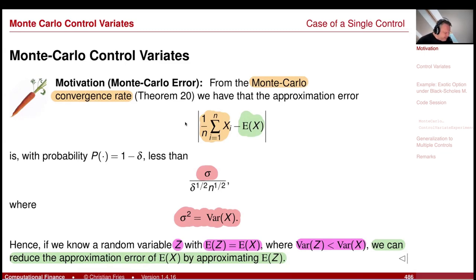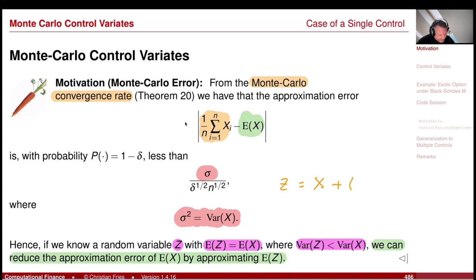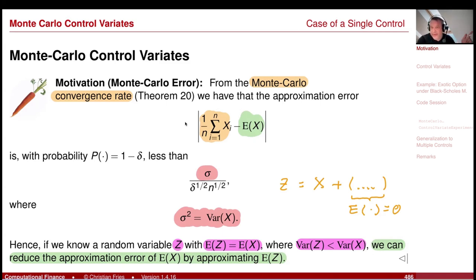How do you get a random variable that has the same expectation as x but maybe a smaller variance? You get this by taking x and adding something where that something has expectation zero. Then z has the same expectation as x. So the question is: can I add something to x such that the variance is reduced?